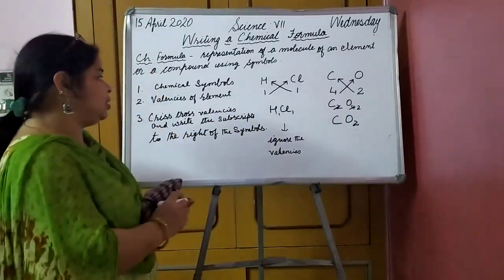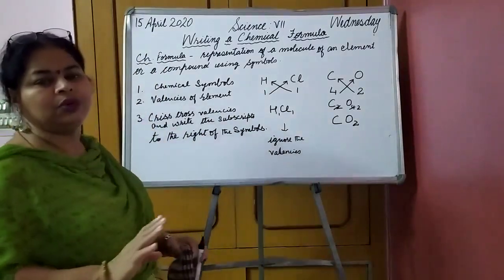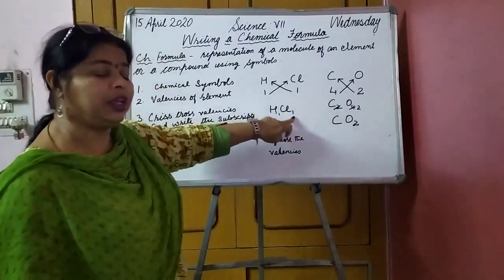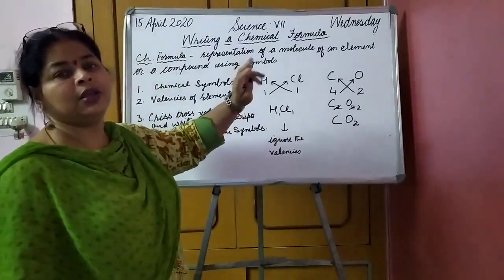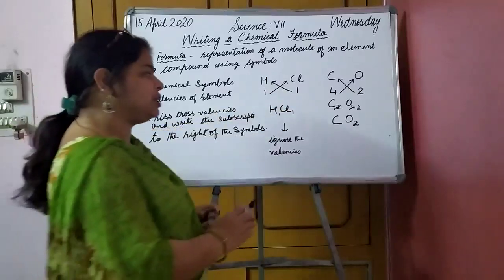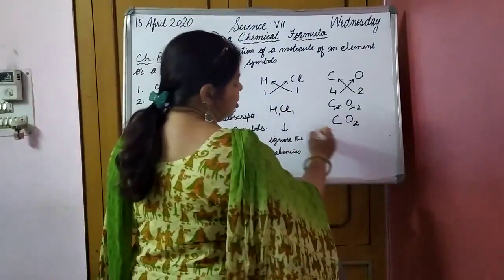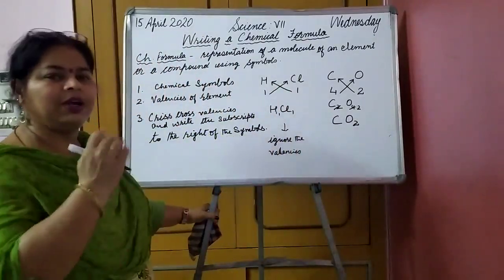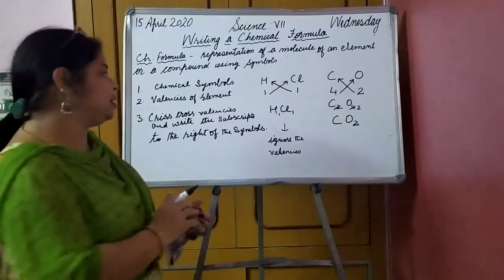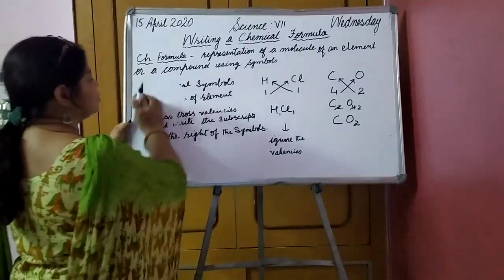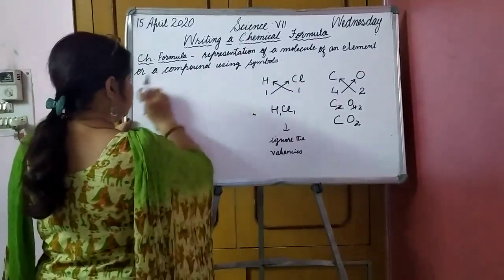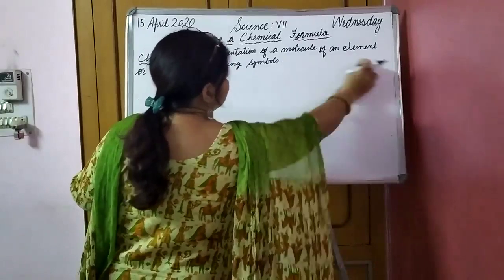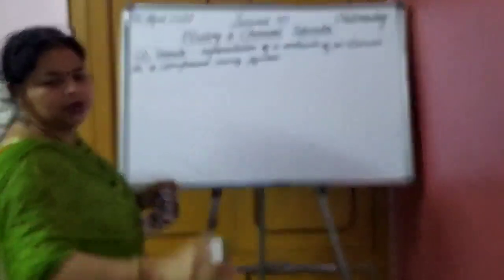I hope these four steps will be learned by you. One more point: if 1 is there, then we will ignore the 1. For example, if it comes out as 1 and 1, or 2 and 2, then we will also divide it because they have a common factor. So let us write some formulas, and you will learn them by heart and come to know how they have been derived.